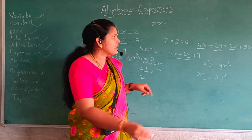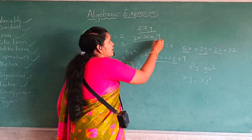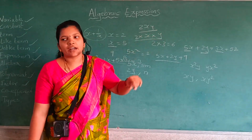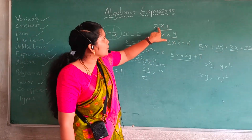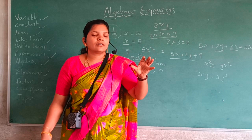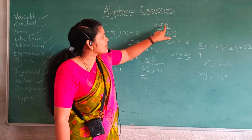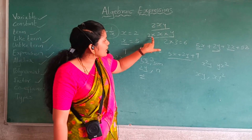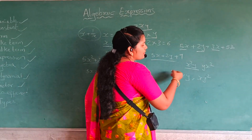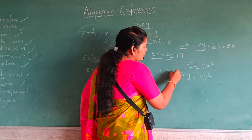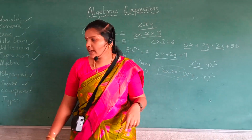In the same way, let's look at factors. For example, 2xy — what are the factors? 2 times x times y. These are called the factors of 2xy. Similarly, what are the factors of x squared y? x times x times y — these are the factors of x squared y.